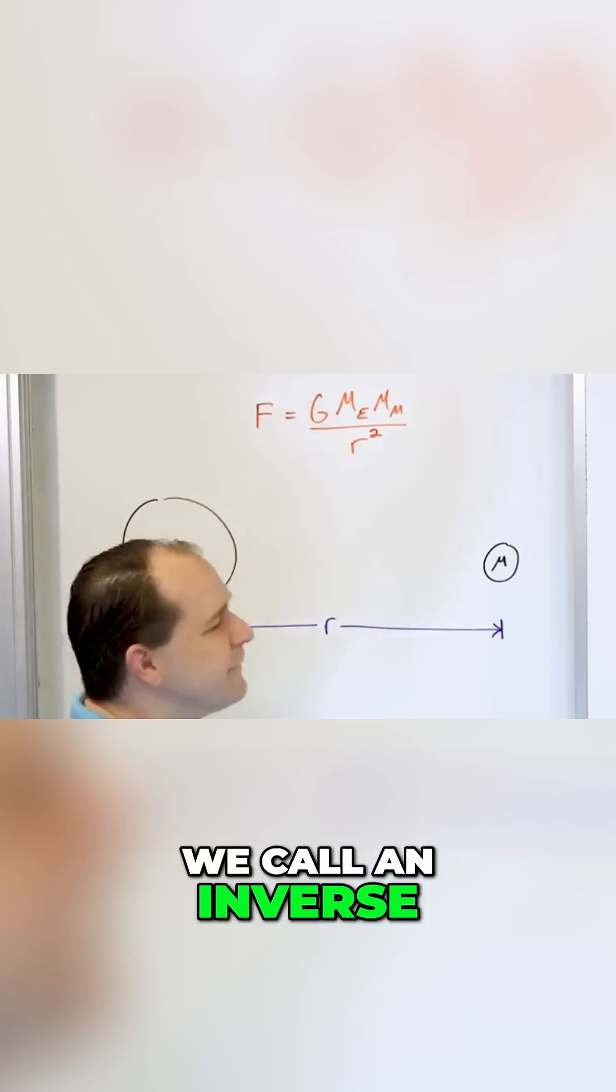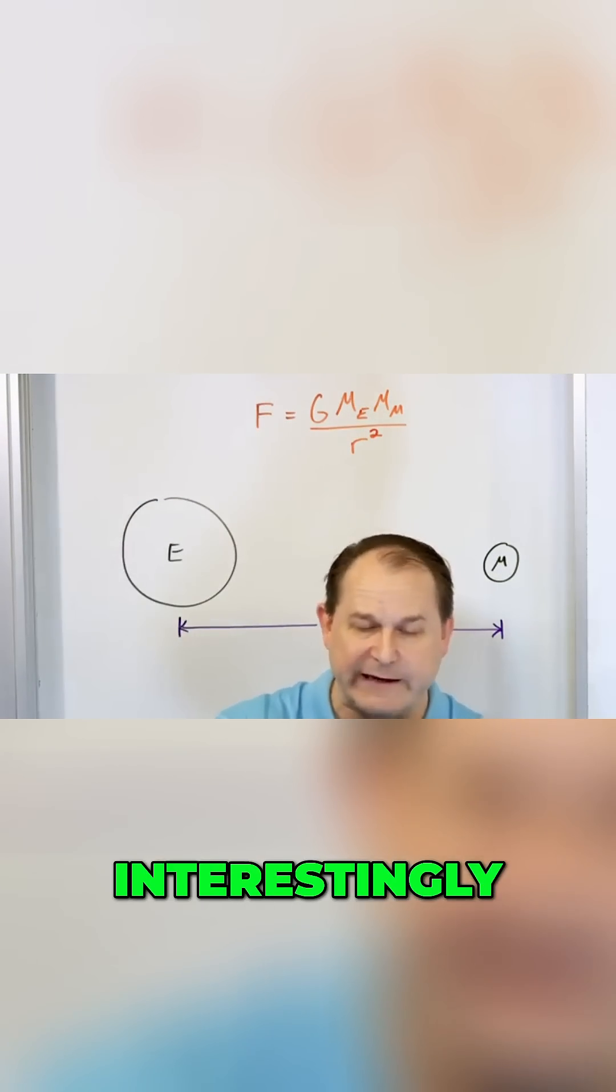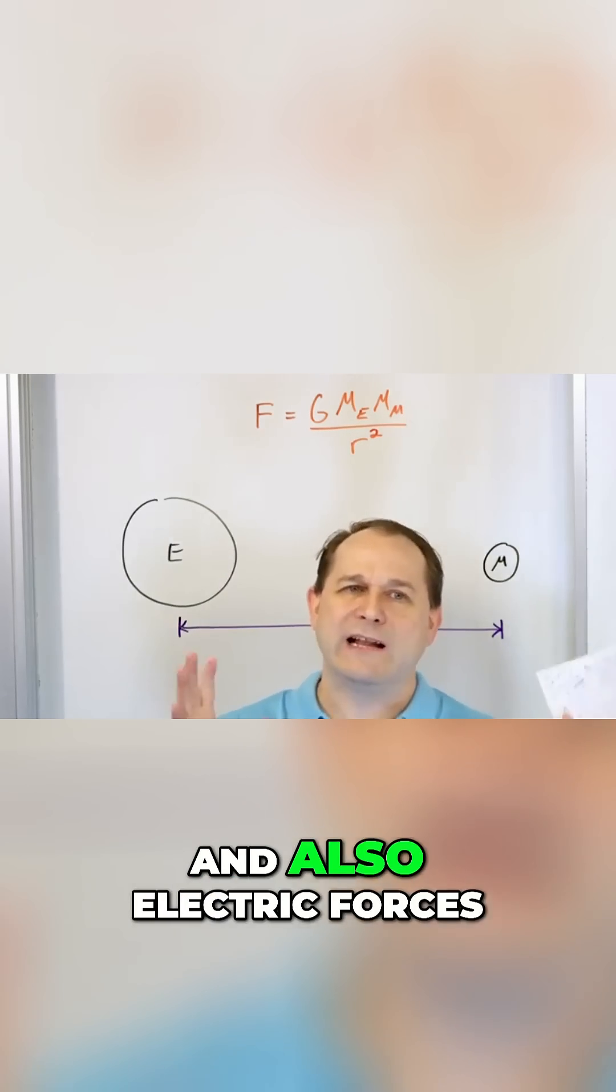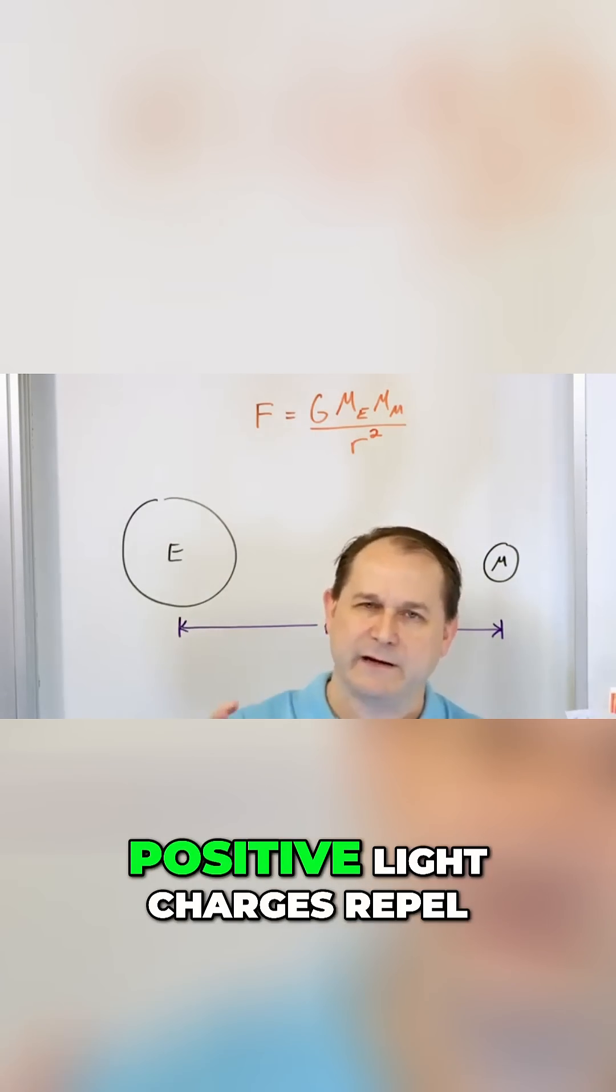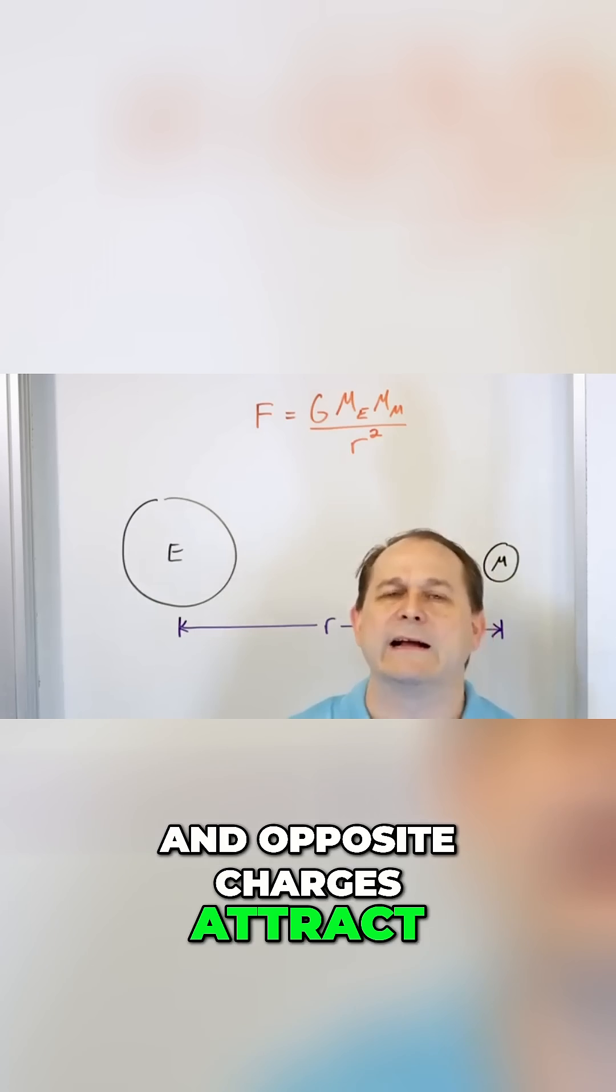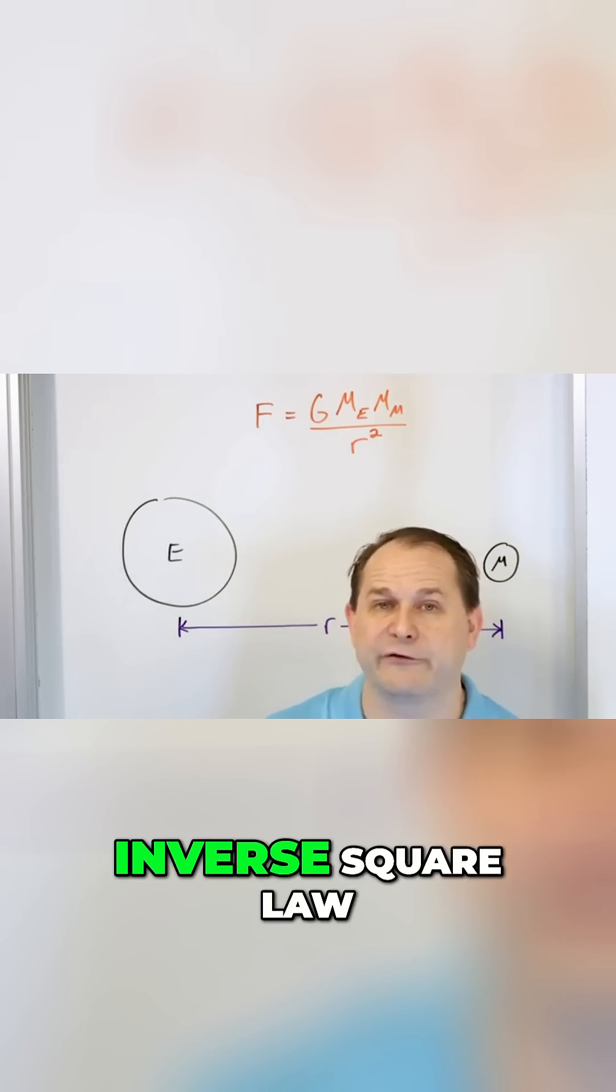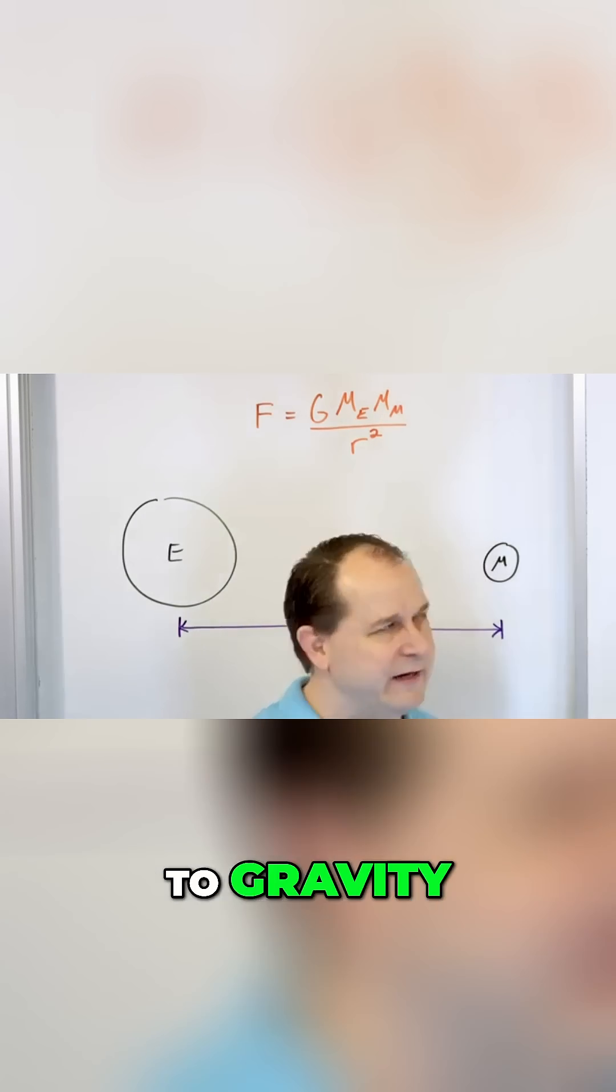So this is what we call an inverse square law. Now, interestingly, gravitation has this inverse square law, and also electric forces - positive charges repel and opposite charges attract - the force of electrical forces are also an inverse square law. It looks very similar to gravity.